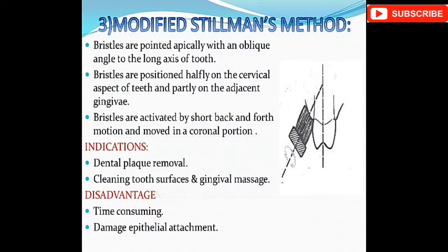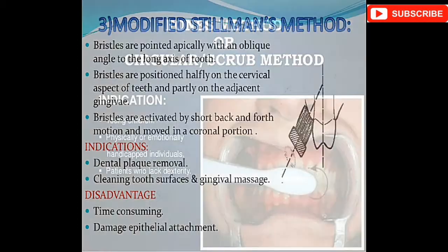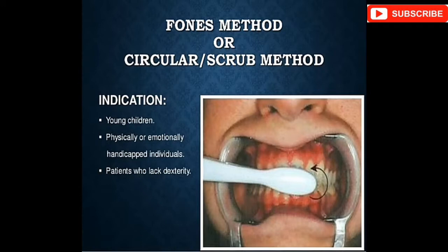The modified Stillman's method: bristles are pointed apically at an oblique angle to the long axis of the tooth. Bristles are positioned half on the cervical aspect of the teeth and partly on the adjacent gingiva, then activated by short back-and-forth motion.